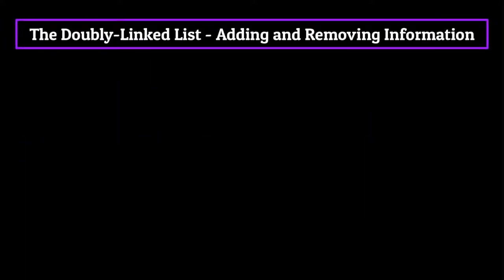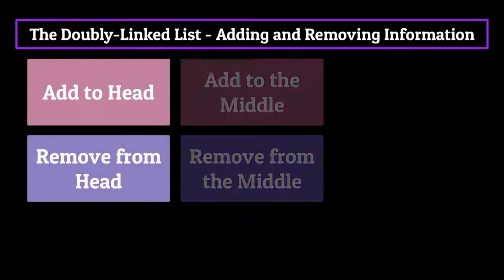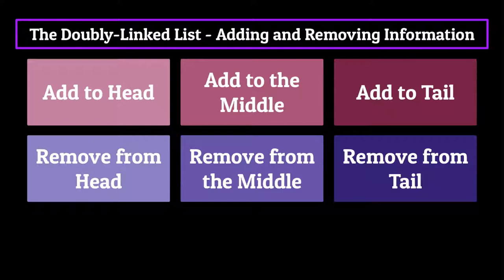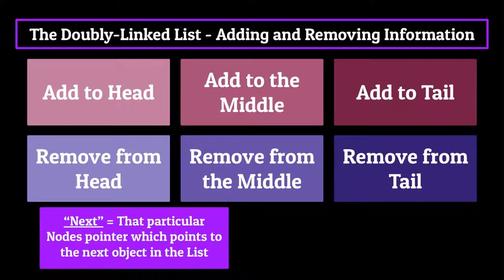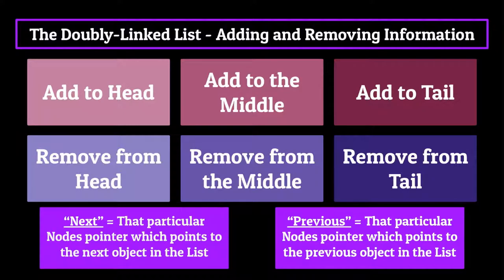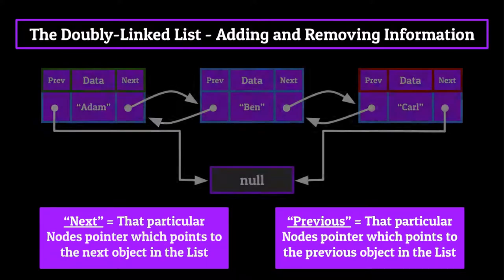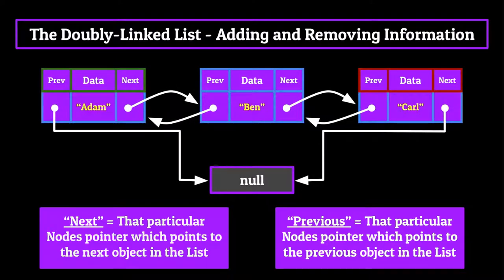Now up next we're going to talk about adding and removing nodes from a linked list, again using the three methods we talked about in our previous segment. Because this can get very confusing very quickly, I want to use some lingo to help consolidate the terminology. When I refer to a node's next, I'm referring to that node's pointer which points to the next object in the list, whether that be another node or a null value. Similarly, when I refer to a node's previous, abbreviated to prev on the visuals, I'm talking about its pointer which points to the previous object in the linked list. I've also set up a basic doubly linked list with three nodes containing three strings to help us out.